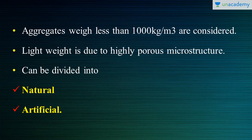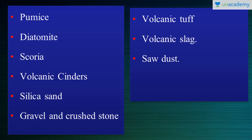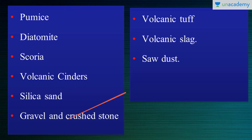Generally, the aggregates can be divided into natural and artificial. We have been looking at the natural aggregates from the previous lesson itself. Let's see the rest of the aggregates we couldn't cover previously. So previously we have seen pumice, diatomite, silica sand, gravel and crushed stone. Today let's see the rest of the team.